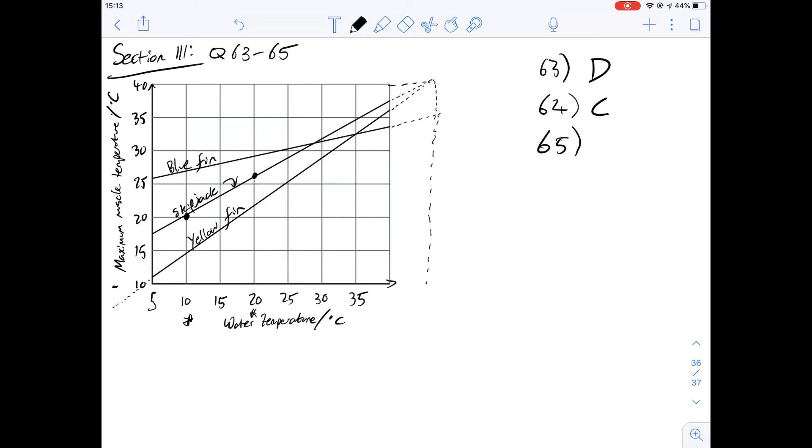In the stem we were told that there are things called retia which are these small arterial and venous blood supplies and that acts like a heat exchange structure, so the one that's most adapted will have the most effective retia. And so the change in or the difference between the water temperature and the maximum muscle temperature will be less, so the gradient would be less. That's the way I think of it so if we look at the one with the least gradient, it's going to be the bluefin and so the answer for number 65 is going to be A, bluefin.